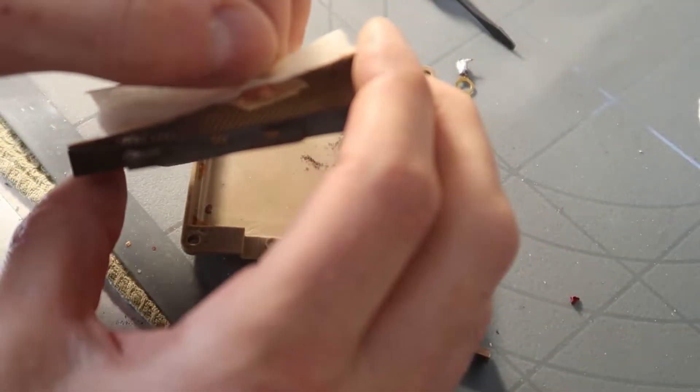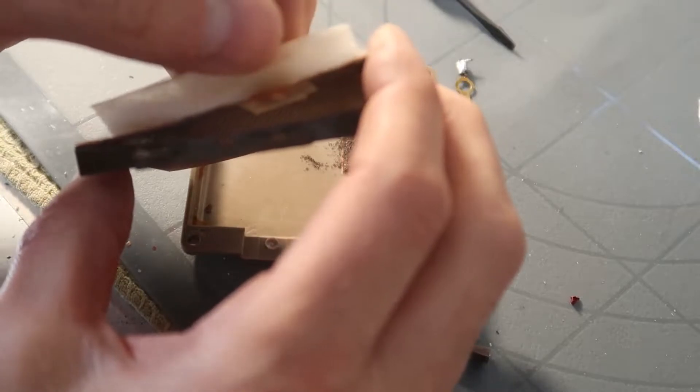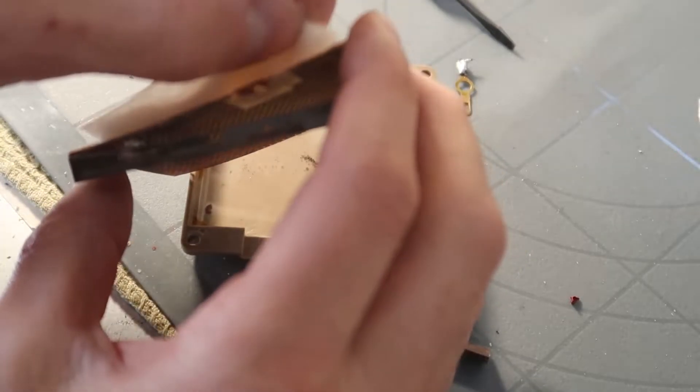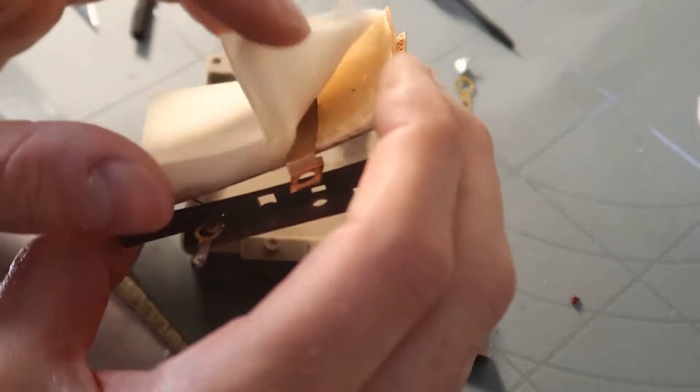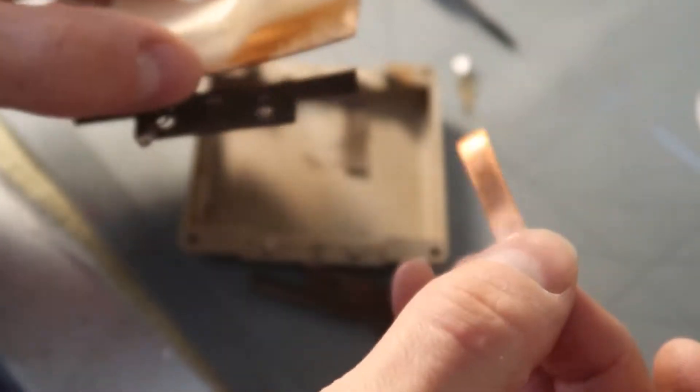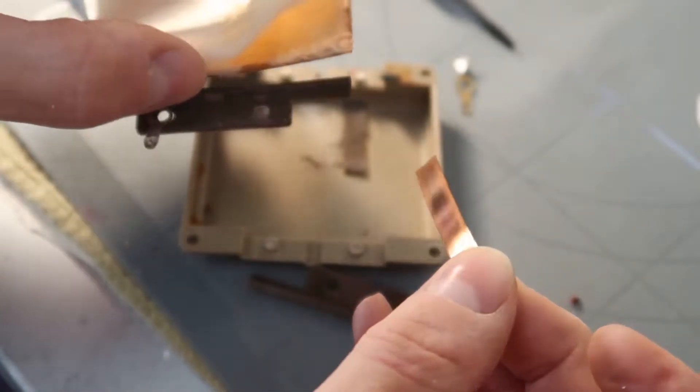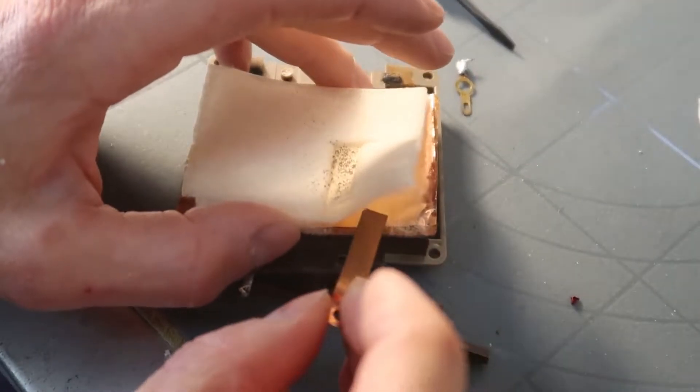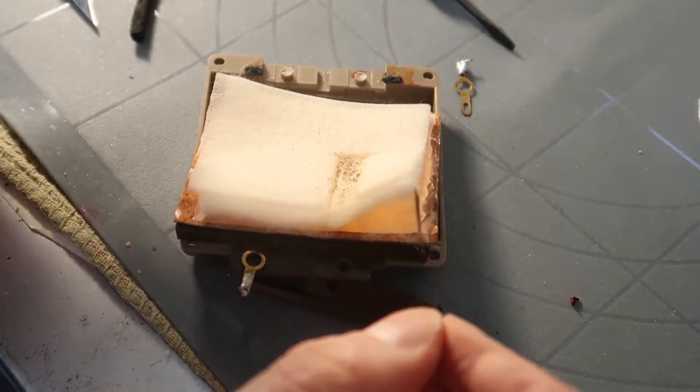If we can get this contact in the right way to touch. So we'll clean it up because it's probably oxidized on the back side here. And then try sticking it back in and adding a new piece of foam and see if that works.